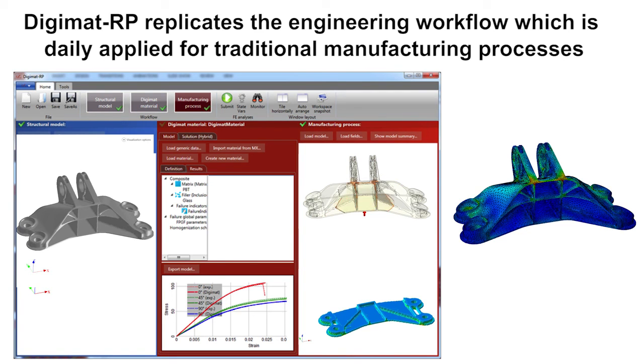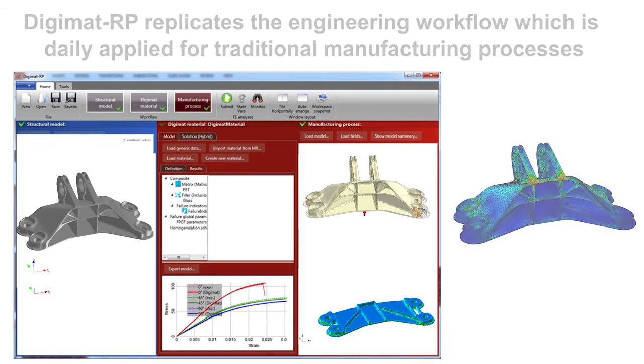Which is applied daily by accounting for the non-linear anisotropic material behavior and the process-induced material microstructure. With Digimat RP, design engineers will now rely on accurate, efficient, and predictive FEA to validate the as-printed part design and optimize its performance.